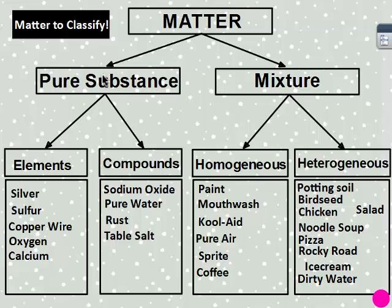Heterogeneous would be potting soil. Bird seed. Again, it depends on your bird seed. If you had the one with sunflower seeds and the little white circles, that would be heterogeneous. Chicken noodle soup. You have chunks of chicken and noodles. Pizza. You have the different layers. Rocky Road ice cream has the marshmallows and the nuts. Dirty water. You have the dirt settling to the bottom. And finally salad. All those are heterogeneous or not uniform throughout.